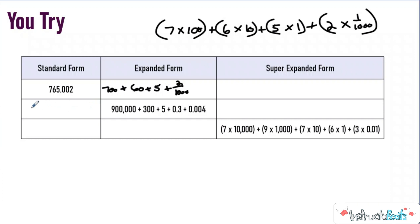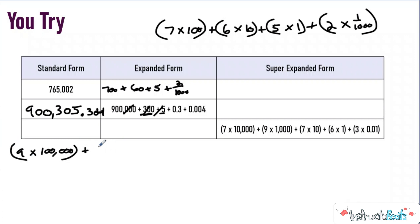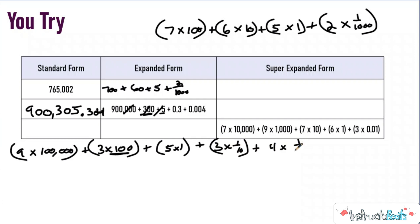This one: we had 900,000, so I have a nine in the hundred-thousands. My next one is a hundred. I don't have anything in the ten-thousands or thousands — I do have a three there. I don't have any tens, so I have to put a zero to make sure my five gets in the ones place. Then I had a decimal: three-tenths, zero hundredths, and four-thousandths. In super expanded form: nine times one hundred thousand, plus three times a hundred, plus five groups of one, plus three groups of one-tenth, plus four groups of one one-thousandth.